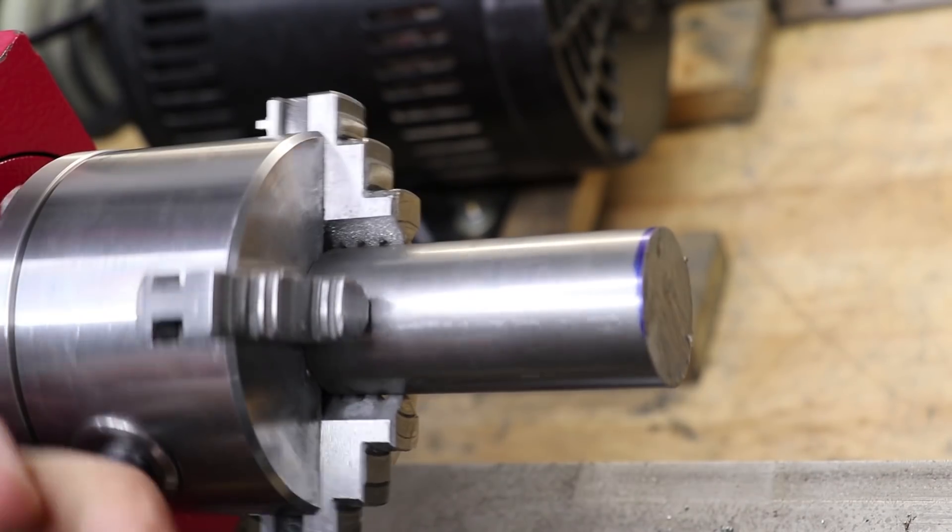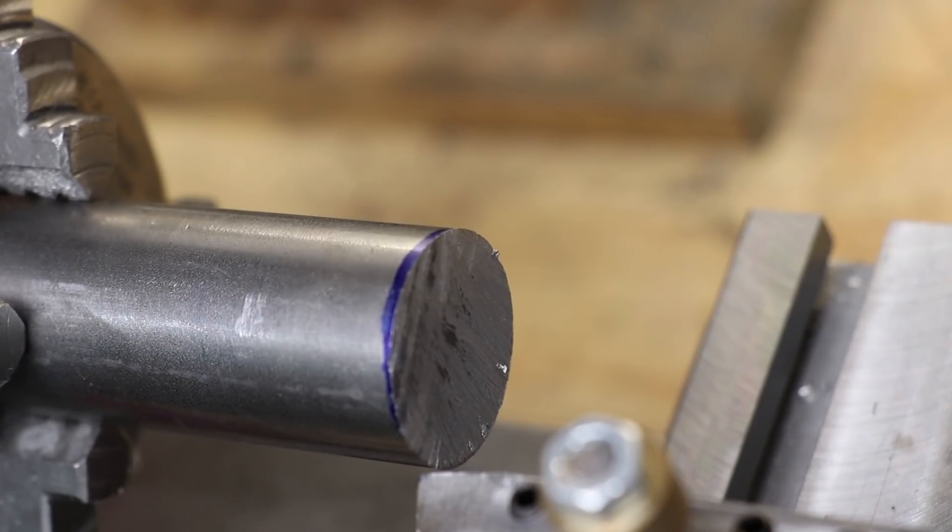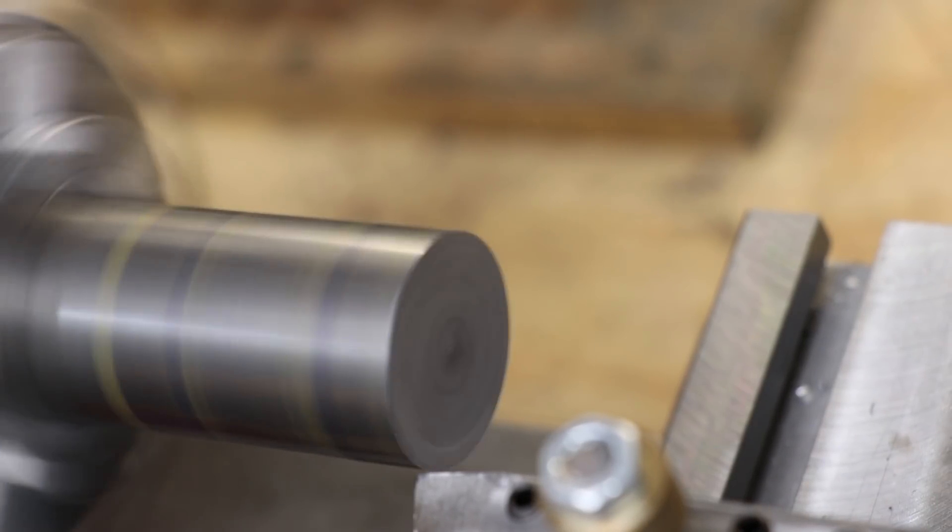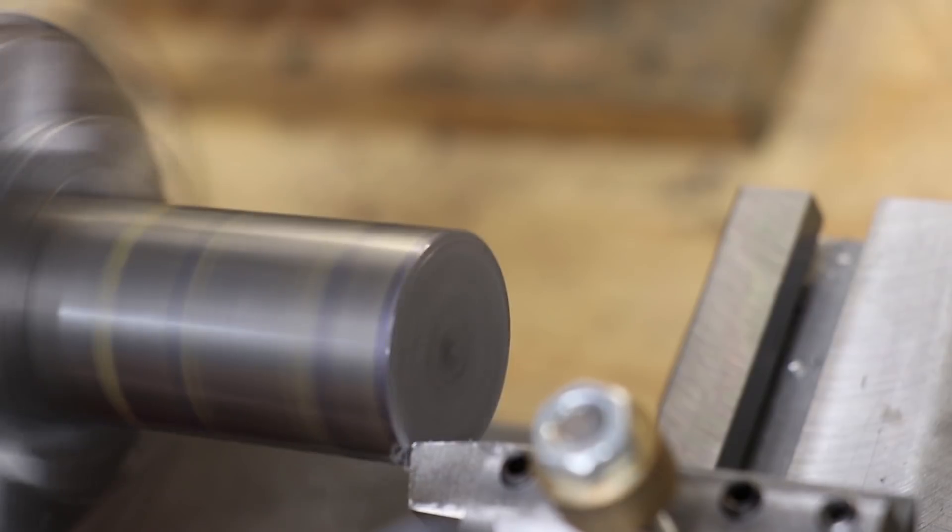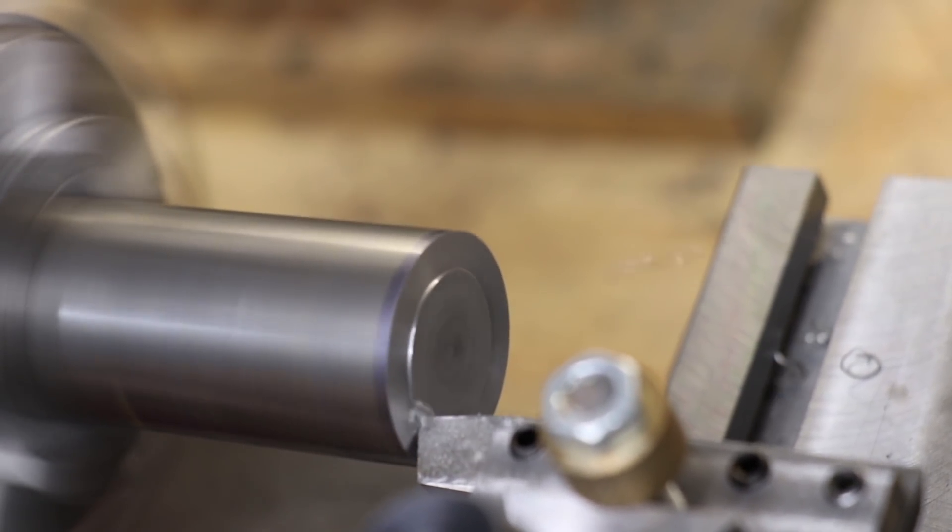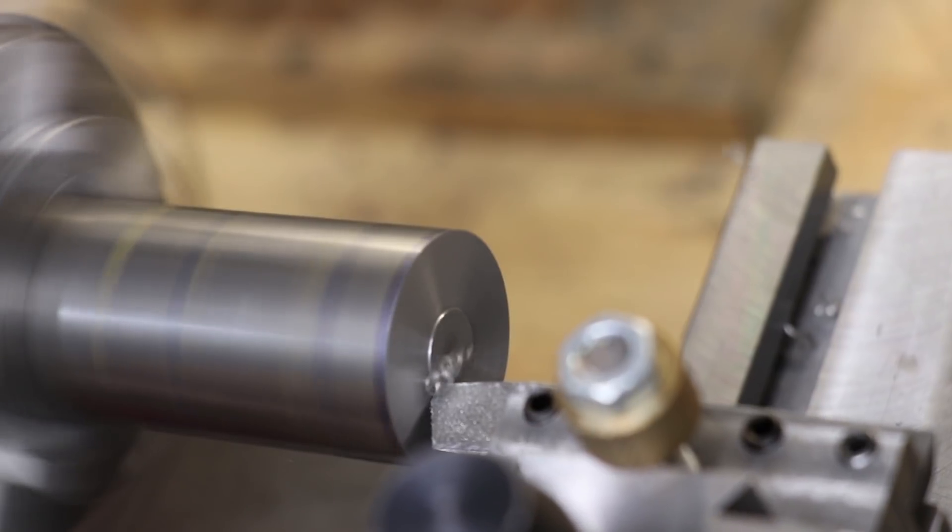I've gone ahead and chucked the stock in the four-jaw in the lathe. Initially getting it concentric isn't a huge problem. Now from this one piece of stock I'll be able to form the main body plus the retaining cap and what I'll do is I'll go ahead and form the cap first.